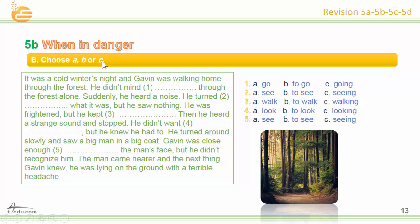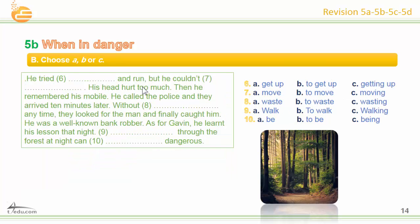Choose A, B, or C — numbers one through five. Now complete these sentences. Number one: going. Number two: to see. Number three: walking. Number four: to look. Number five: to see. Number six: to get up. Number seven: move. Number eight: wasting. Number nine: walking. Number ten: B.